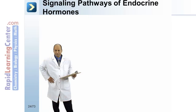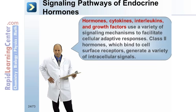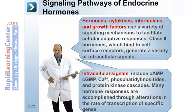Hormones, cytokines, interleukins, and growth factors use a variety of signaling mechanisms to facilitate cellular adaptive responses. Class II hormones, which bind to cell surface receptors, generate a variety of intracellular signals, including cyclic AMP, cyclic GMP, calcium, phosphatidyl inositides, and protein kinase cascades. Many hormone responses are accomplished through alterations in the rate of transcription of specific genes.